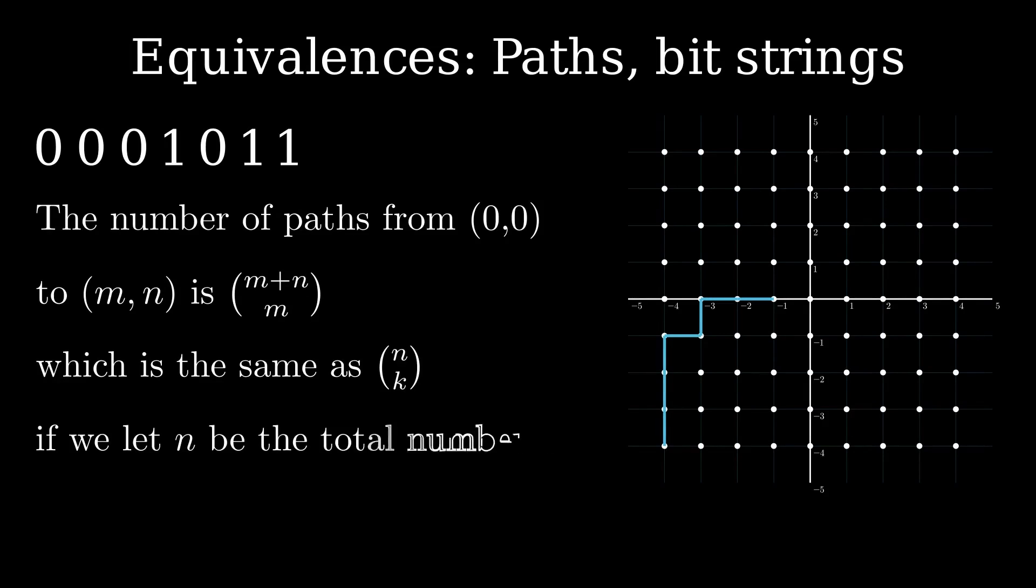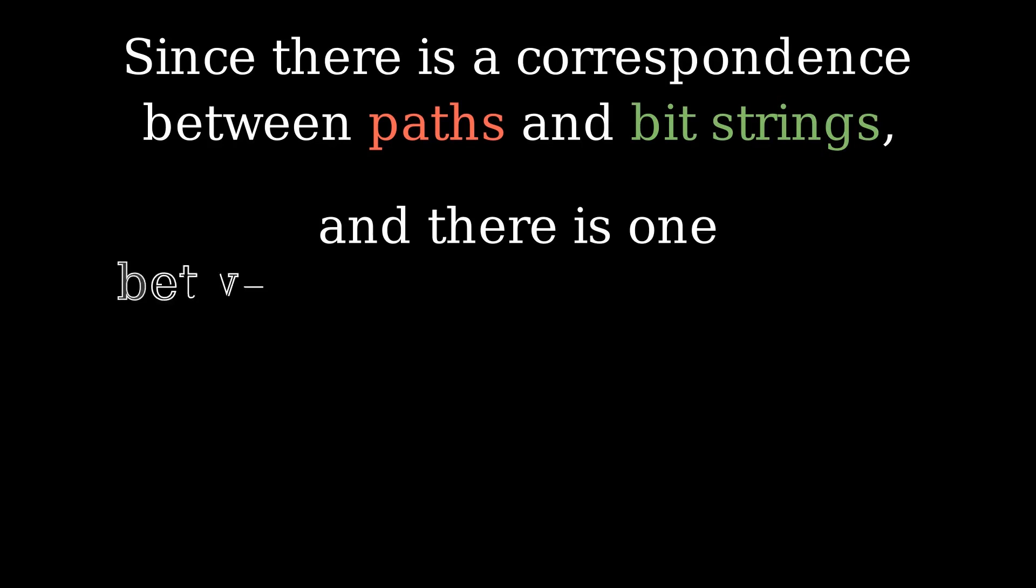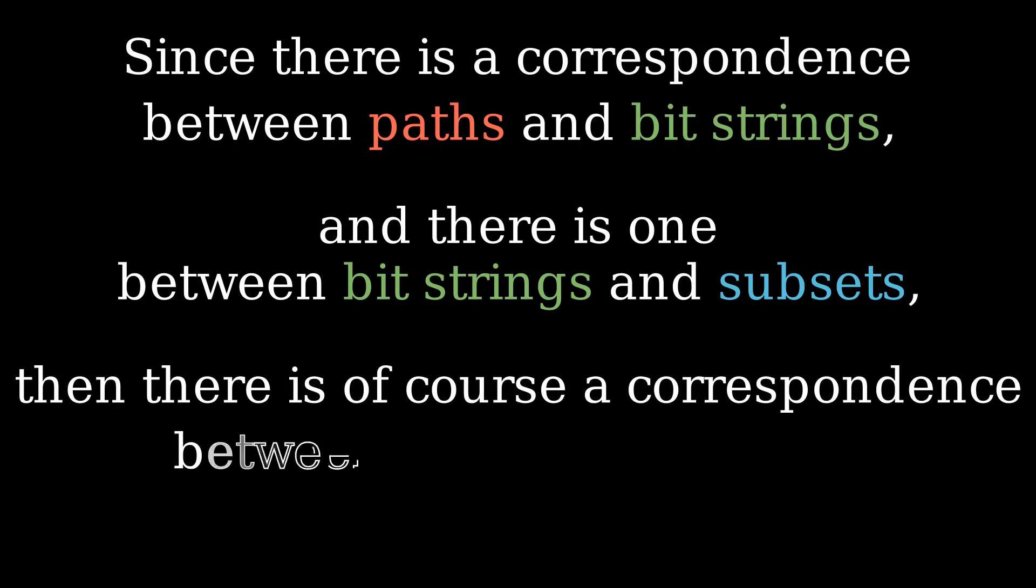To make this idea more precise, we take all lattice paths from the origin to a point M comma N. We identify these with all bit strings with M ones and N zeros. Based on all that we've seen by now, it is clear that these are bijective with subsets of size M taken from bracket M plus N.